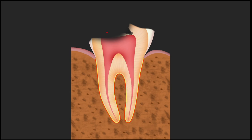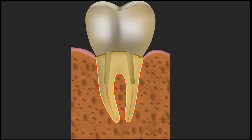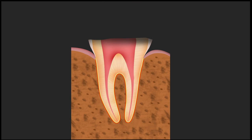Let's consider another situation: there is gross decay with pulpal involvement. After finishing root canal treatment, we go for a post, followed by core construction and a full coverage restoration. In this situation also, there will be no chances for the crown to get dislodged.